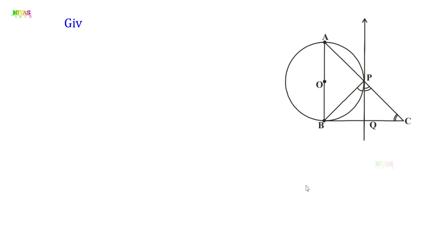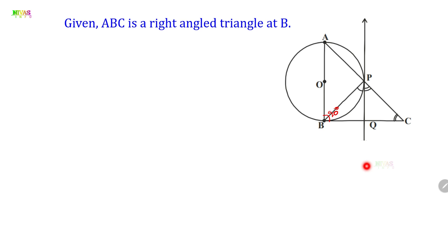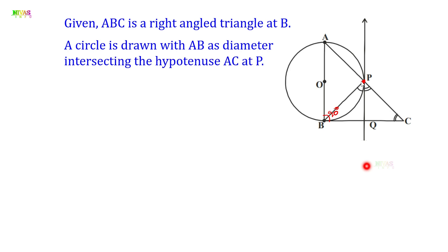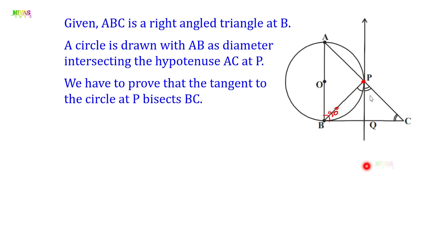Here, ABC is a right angle triangle with the right angle at B, which is 90 degrees. AB is the diameter and AC is the hypotenuse. The circle is drawn with AB as diameter, intersecting the hypotenuse AC at point P. A tangent is drawn at P, and we have to prove it bisects BC.